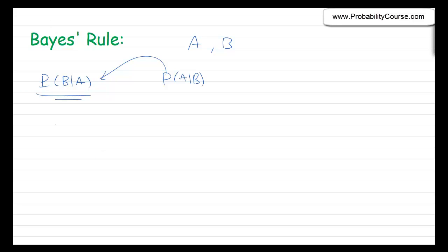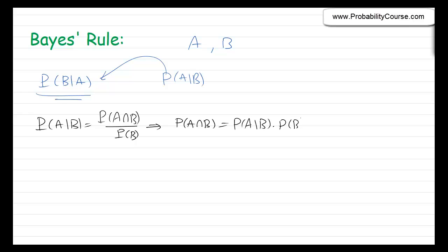To do that, let's remember the formula for conditional probability. Probability of A given B is equal to probability of A and B divided by probability of B. So from here, I can conclude probability of A and B is the same as probability of A given B times probability of B. Now, I just want to rewrite this equation by replacing A and B, so I obtain probability of B and A is equal to probability of B given A times probability of A. Note that A and B is the same as B and A — the intersection of A and B is the same as the intersection of B and A, so these two are equal.